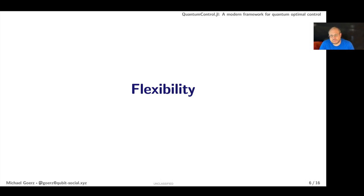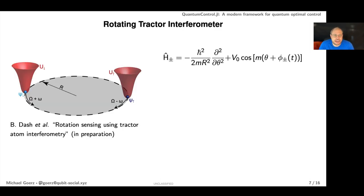Let's talk about what we mean by flexibility. Take this example that we're currently working on. These are atoms trapped in a cosine potential and you want to control the movement of these atoms in a circle. You want to accelerate them and decelerate them in a counter-rotating scheme to implement an interferometer. The Hamiltonian looks something like this and the control that you have is the offset to the theta coordinate, so that's the rotation around the circle.